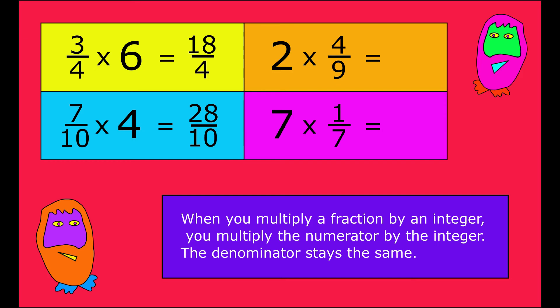Seven-tenths multiplied by four equals twenty-eight-tenths, because seven multiplied by four is twenty-eight and we're working in tenths. Two multiplied by four-ninths is eight-ninths, because two multiplied by four is eight and we're working in ninths.